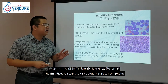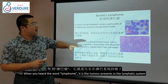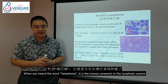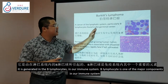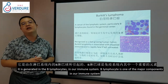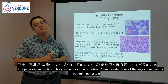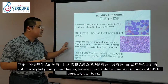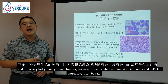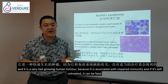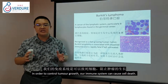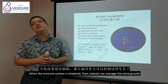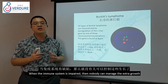The first disease is Burkitt's lymphoma. When you hear the word lymphoma, it is a kind of tumour within the lymphatic system, generated in the B-lymphocyte of our immune system. It is a very fast-growing human tumour because it is associated with impaired immunity. If left untreated, it can be fatal, because the immune system normally causes cell death to control tumour growth.